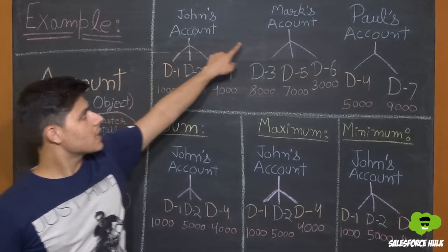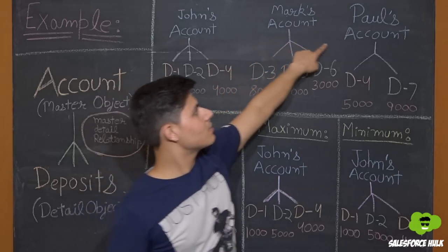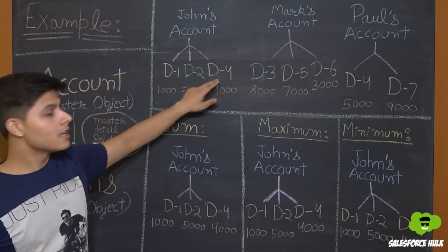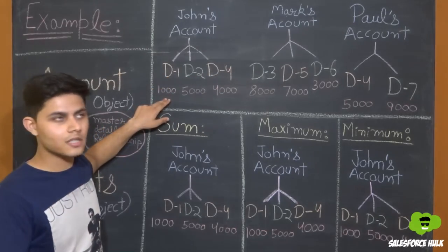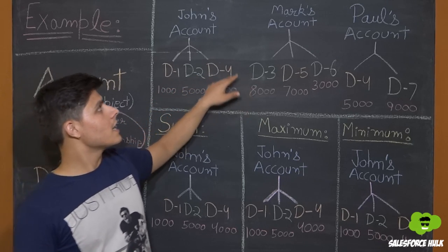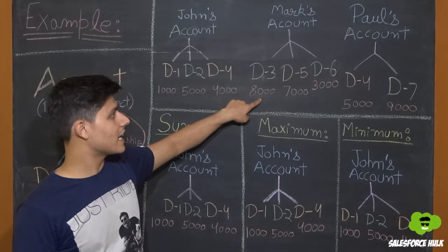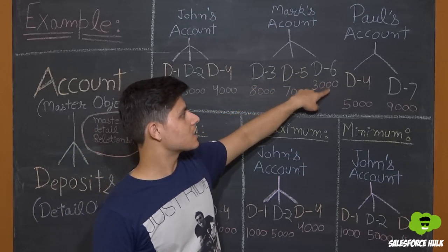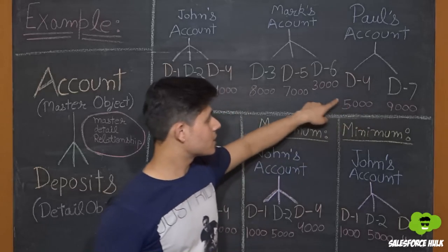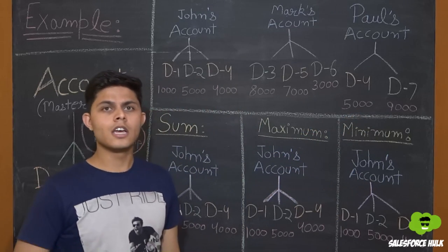There are three account records. First is John's account, second is Mark's account, and third is Paul's account. In John's account there are three deposits: D1 is 1,000 dollars, D2 is 5,000 dollars, and D4 is 4,000 dollars. In Mark's account there are three deposits: D3 is 8,000 dollars, D5 is 7,000 dollars, and D6 is 3,000 dollars. In Paul's account there are two deposits: D4 is 5,000 dollars and D7 is 9,000 dollars.